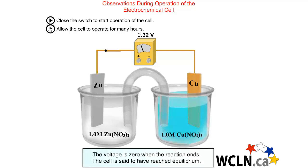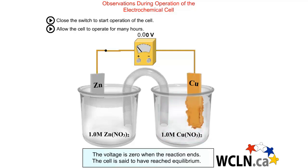When this cell is allowed to operate for many hours, the zinc electrode in the left half cell begins to be oxidized and you can see that the electrode dissipates. The copper electrode on the other side has copper ions reduced to copper atoms.